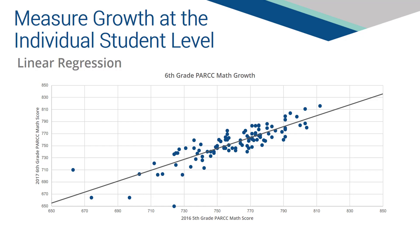Each starting PARCC score in grade 5 would have a different projected score for grade 6. It is called linear regression because the relationship between the current year's scores and the previous year's scores is assumed to be linear. If ISBE develops the linear regression model using all students in Illinois, the projected score for each student takes on the following definition: the score needed to demonstrate growth consistent with the average growth of similar students across the state.